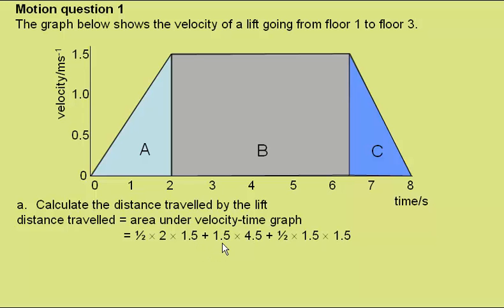The area of B is a height of 1.5. The length goes to 6.5 from 2, and so has a length of 4.5. Area C, half times the base of 1.5 times the height of 1.5, giving a total area of 9.375 metres.